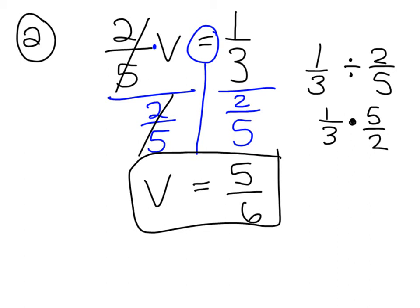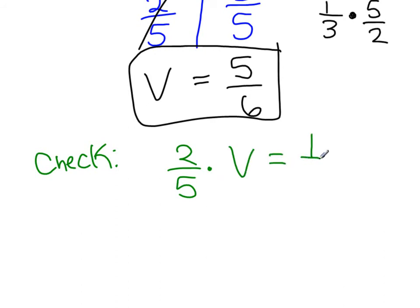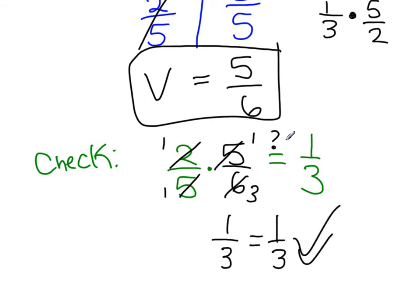Let's verify the solution by plugging v equals 5/6 back into the original equation: (2/5) times (5/6) equals 1/3. Simplifying: the 5s cancel, the 2 and 6 reduce — 2 goes into 6 three times — leaving 1/3. Since 1/3 equals 1/3, the solution checks out.